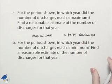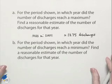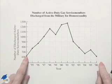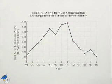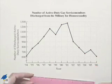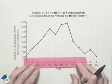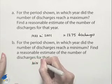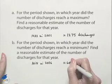For the period shown, in which year did the number of discharges reach a minimum? Find a reasonable estimate of the number of discharges for that year. Looking back at the chart, we're looking for the smallest value. We can see that it's either going to occur at the beginning or at the end, and it's slightly lower on the right-hand side — occurring in the year 2006, right on the line with 600. So the minimum occurred in the year 2006 with about 600 discharges.